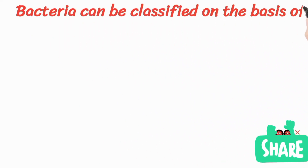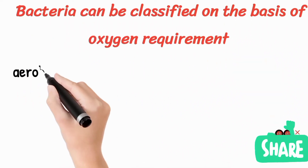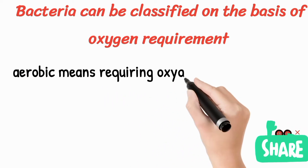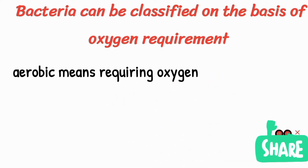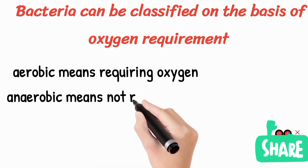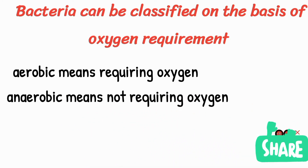Bacteria can be classified on the basis of oxygen requirement. There are aerobic bacteria that require oxygen for the production of their energy ATP, which is the source of energy. And then there are some bacteria that are anaerobic, which means that they do not require oxygen.